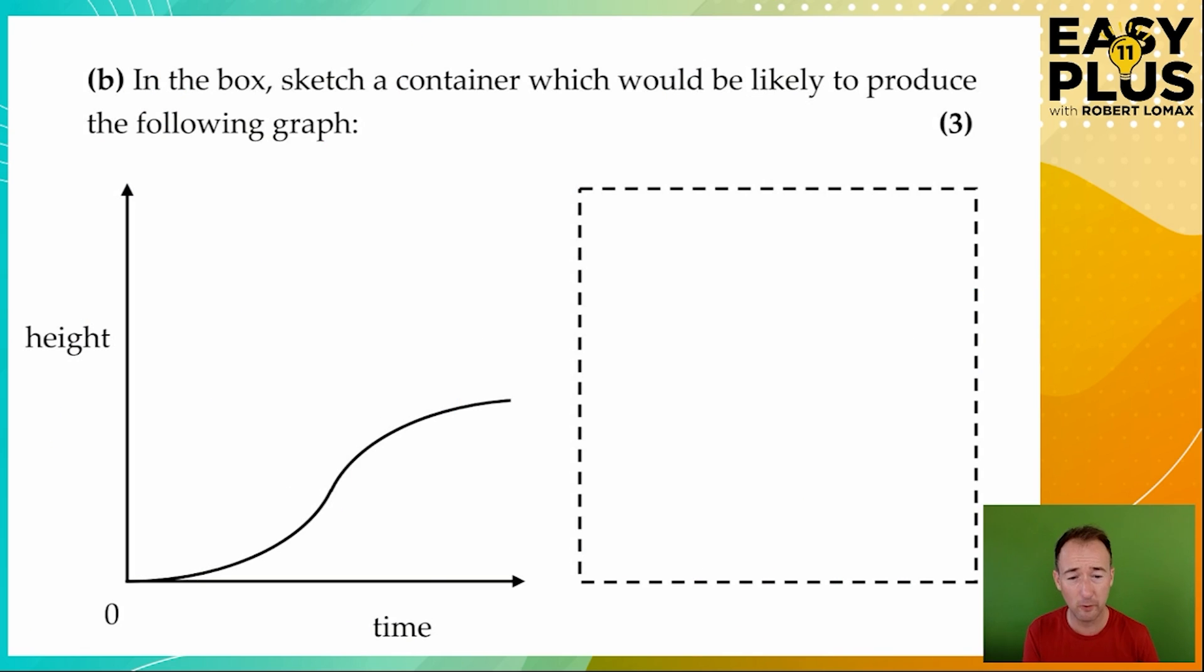Now we're doing it the other way round. So here we've got a graph and we have in the same way to sketch a container that might produce this result. We can see that there are two parts to this graph.